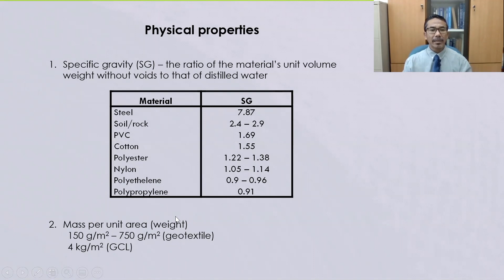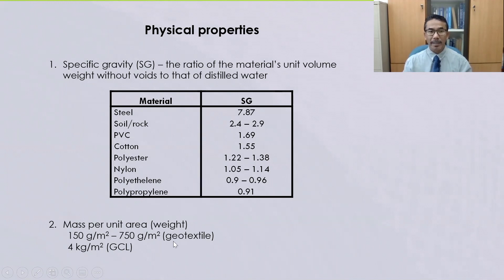In terms of mass per unit area, the value depends on the type of Geosynthetic. For example, a geotextile may range from 150 grams per meter squared up to 750 grams per meter squared. However, in the case of a Geosynthetic Clay Liner (GCL), the mass per unit area may reach up to 4 kilograms per meter squared.